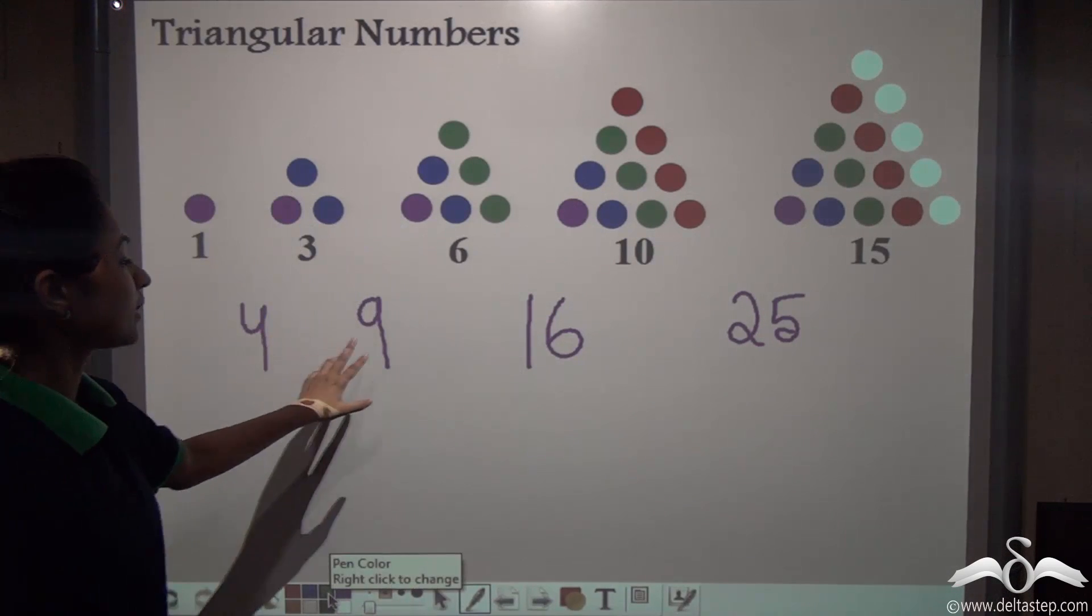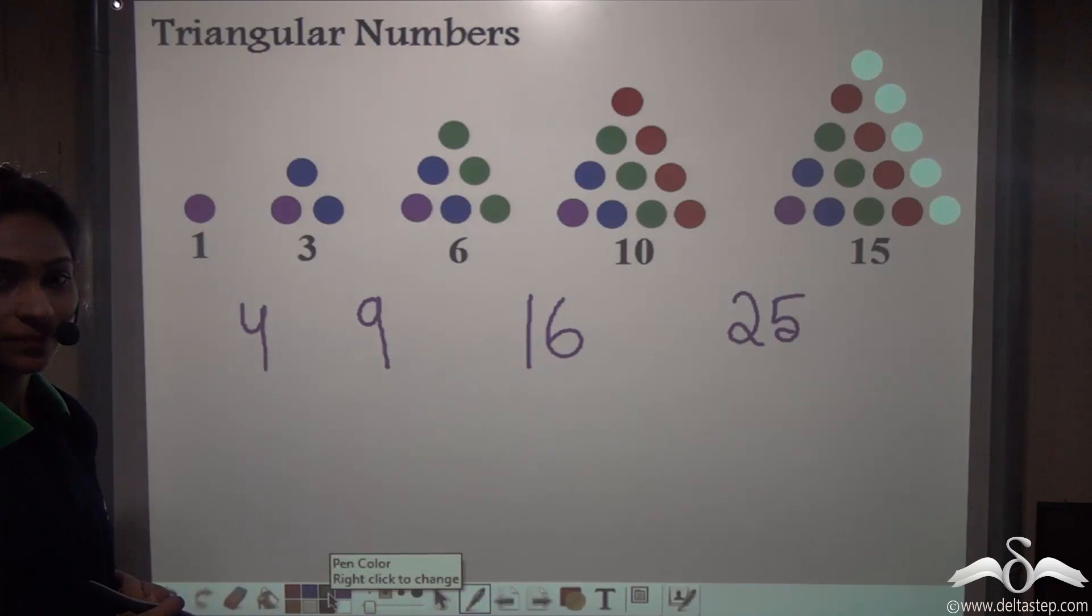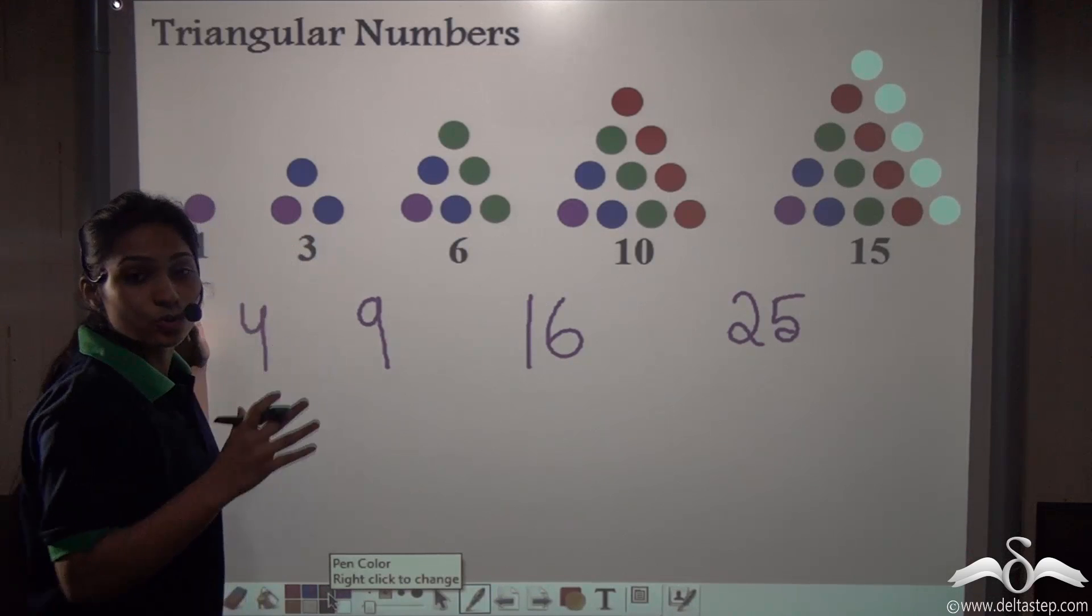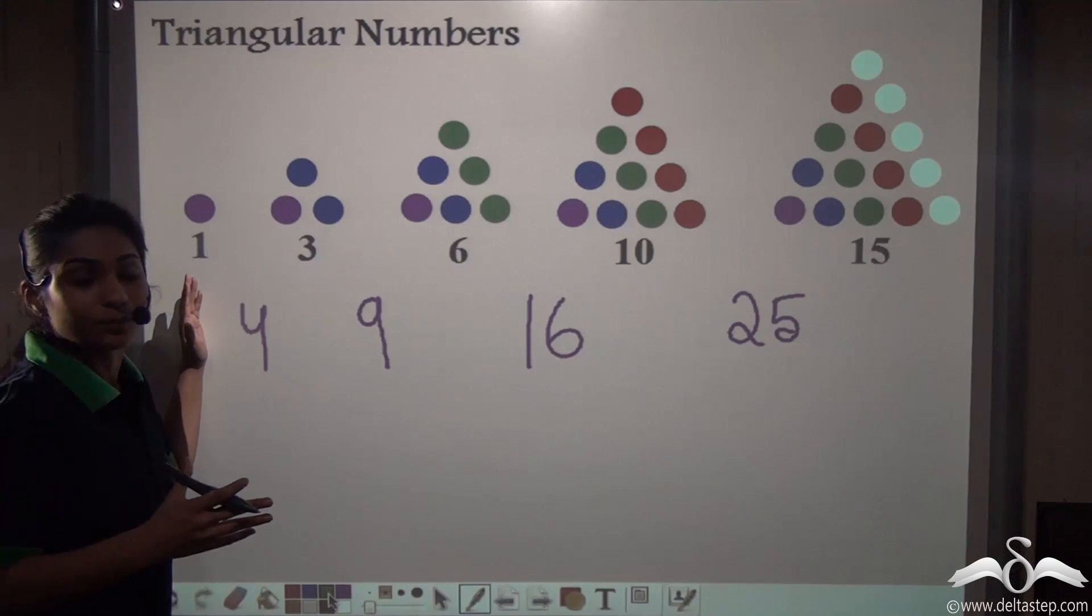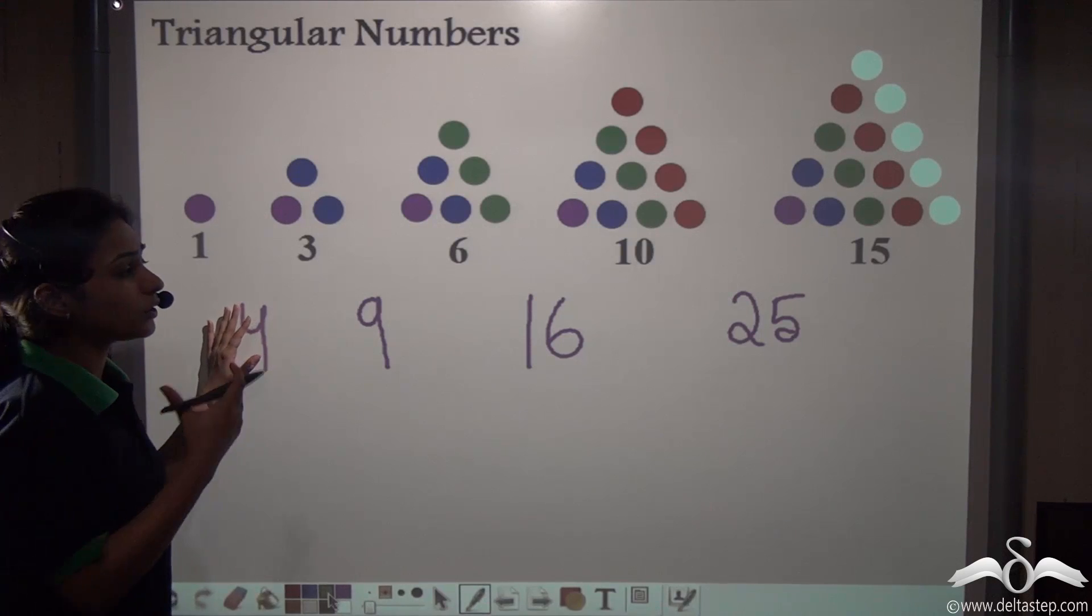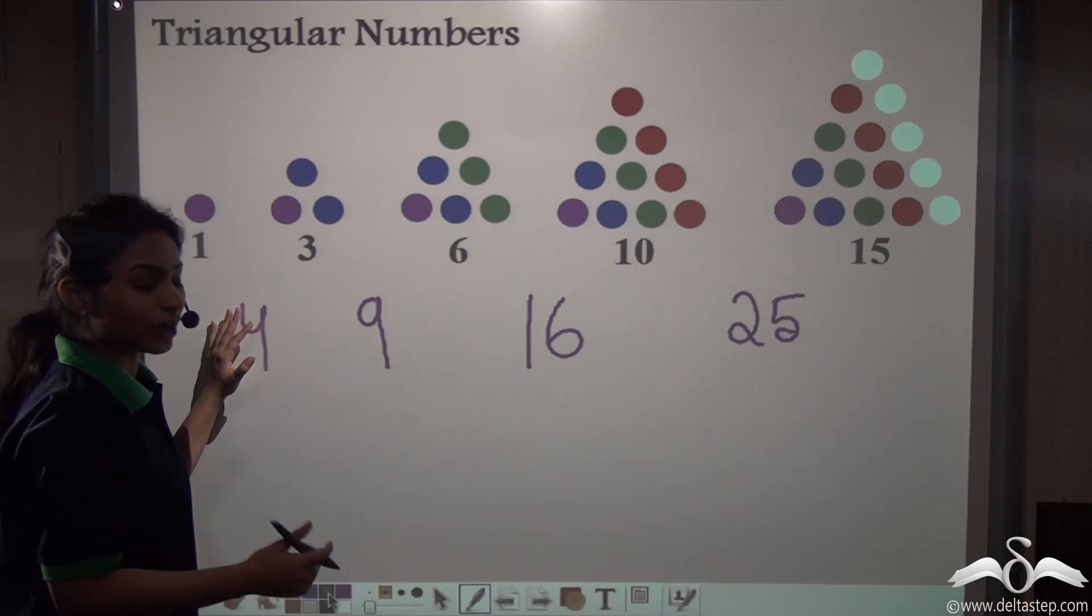Well, tell me whether these are perfect squares or not. So, you did not know this interesting fact about these square numbers. Adding any two consecutive triangular numbers will give you always perfect squares. Well, how does this happen? Well, I will tell you that also.